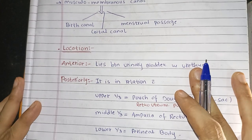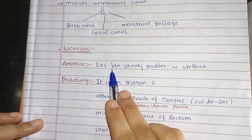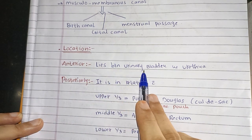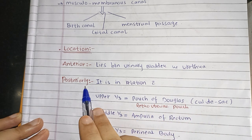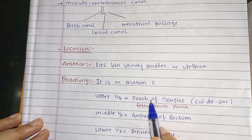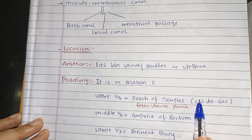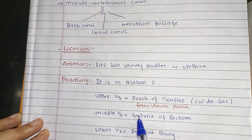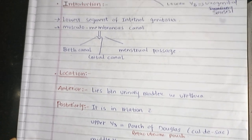Now see its location — where it is located. Anteriorly, it lies between urinary bladder and urethra. Posteriorly, it is in relation with the upper one-third with the pouch of Douglas, also known as retro uterine pouch or cul-de-sac. The middle one-third is related to the ampulla of rectum, and the lower one-third to the perineal body.